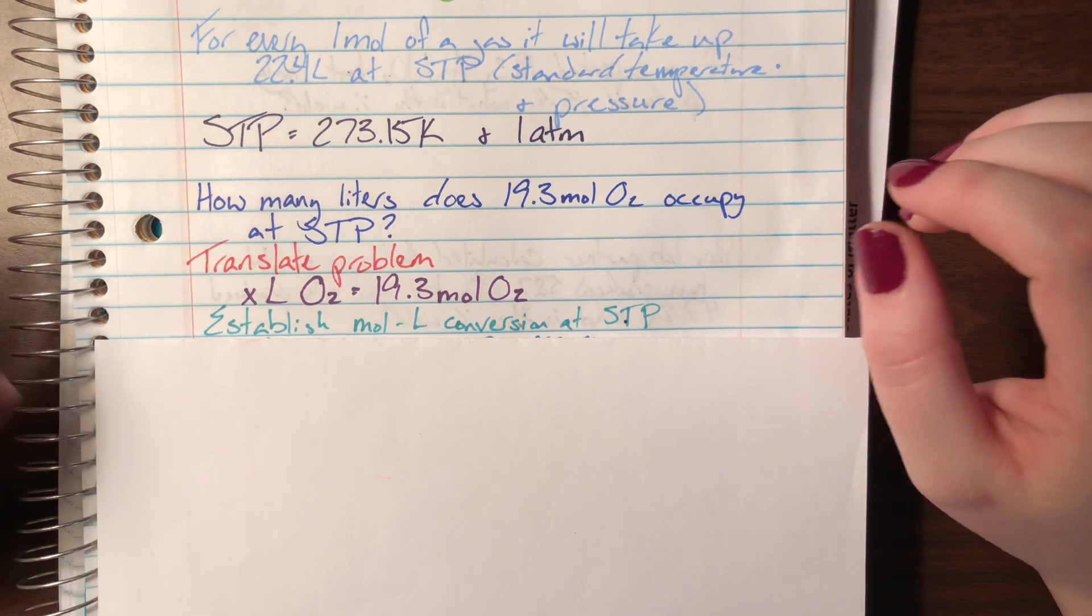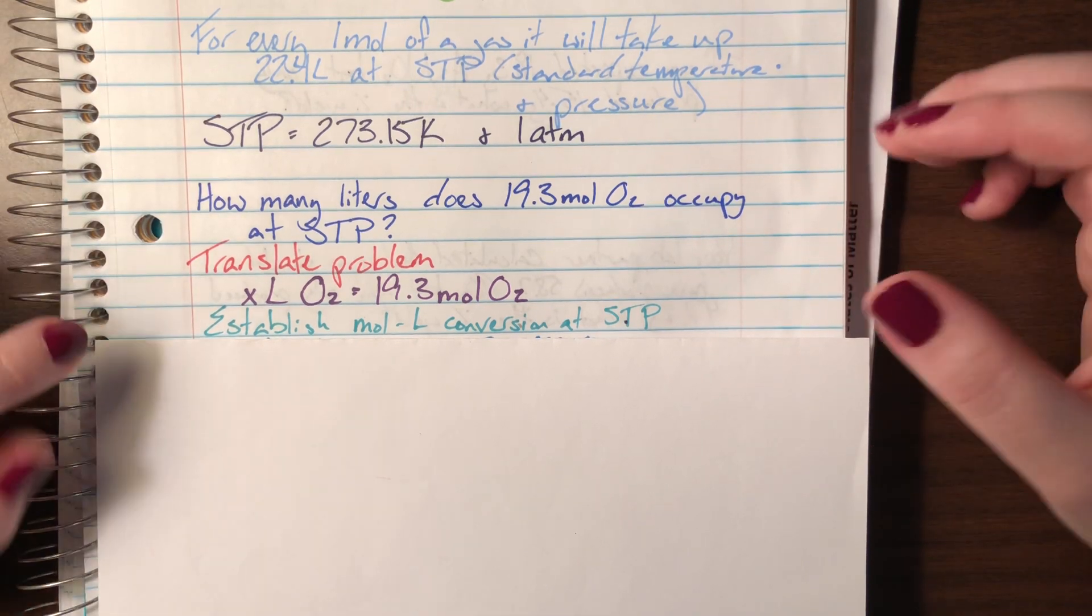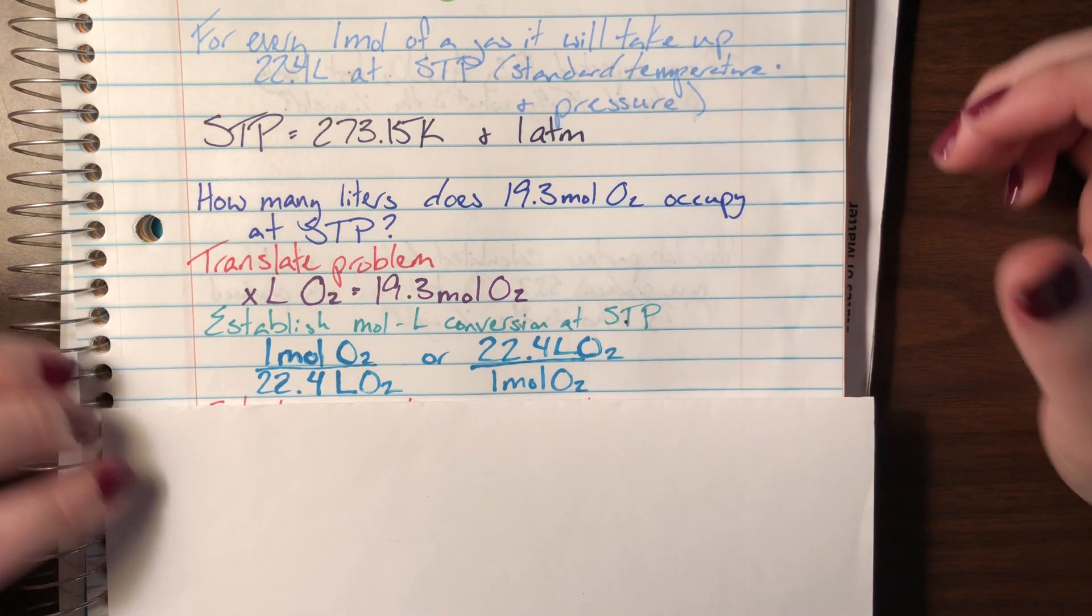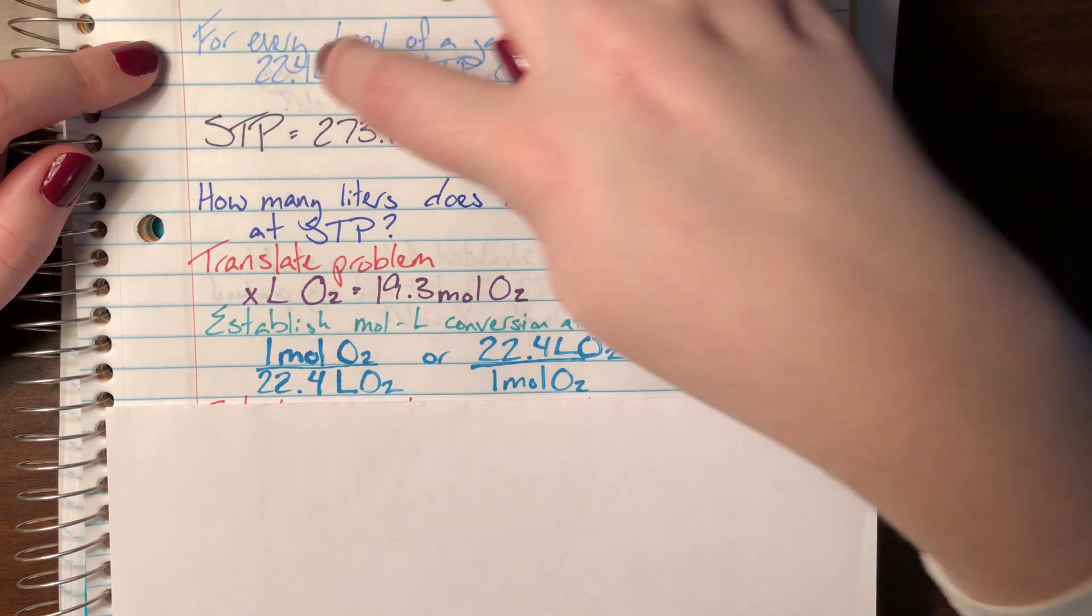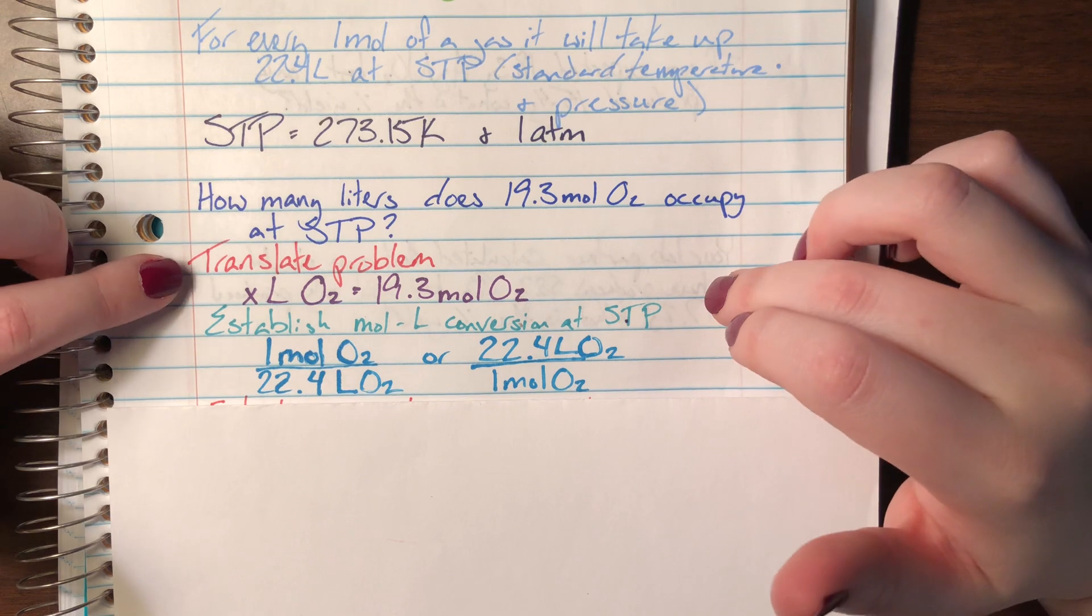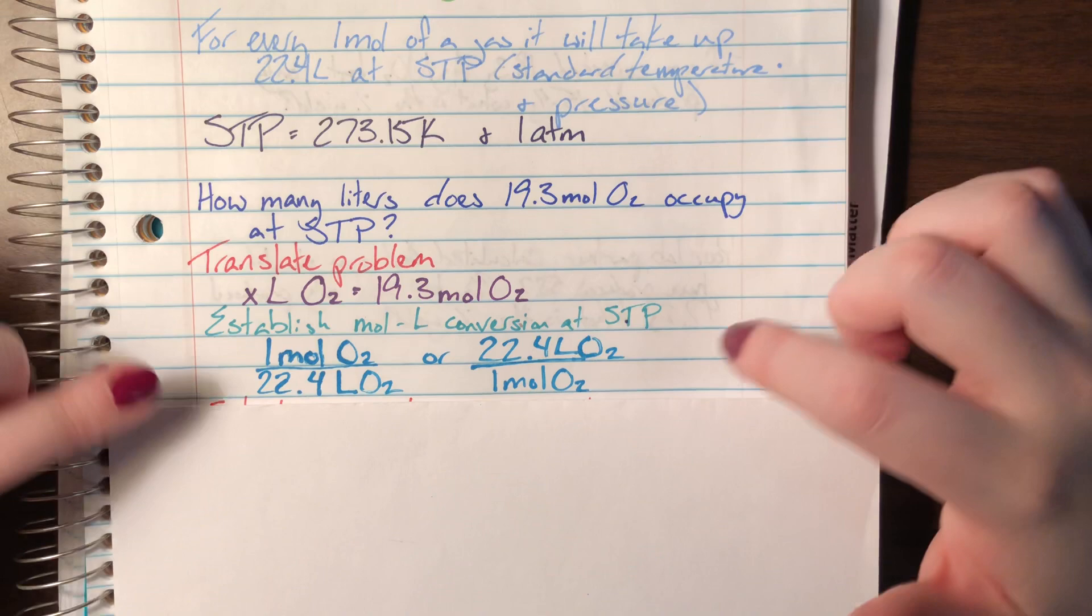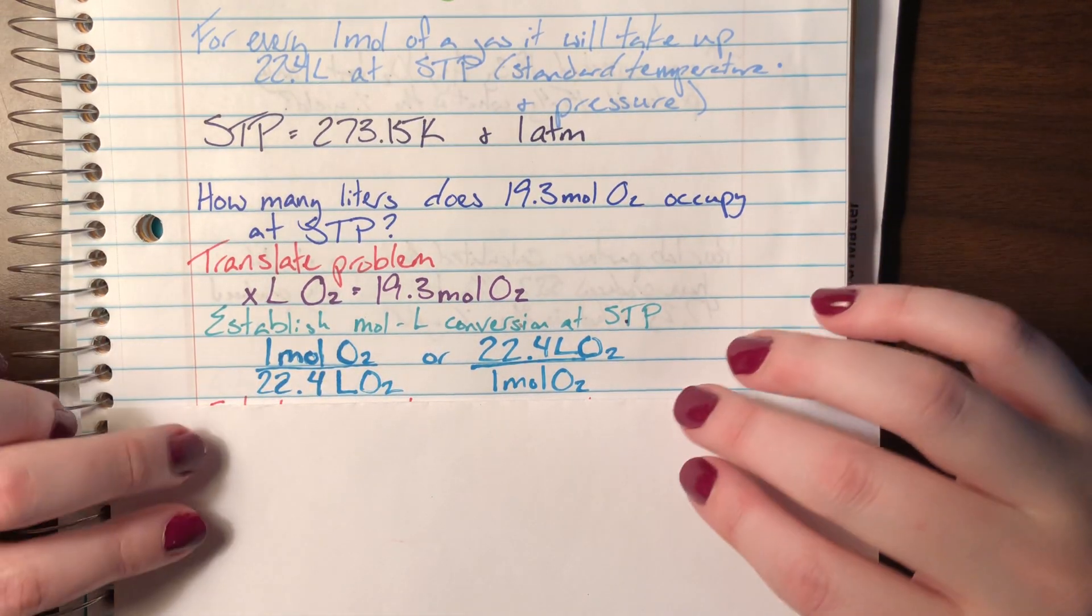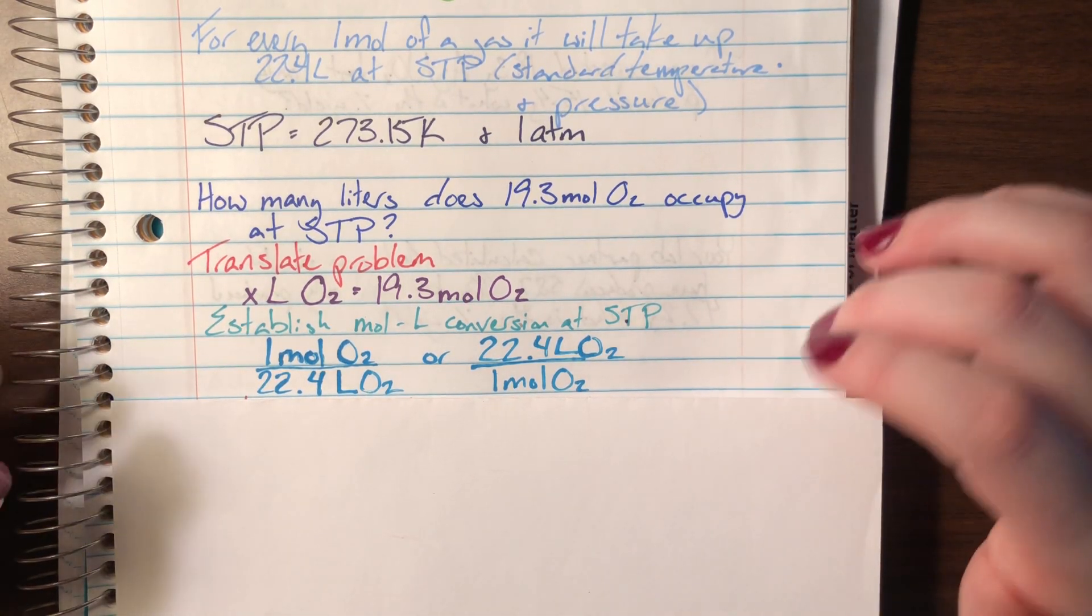So we need to establish this conversion right now. It's in a sentence form. We're going to go ahead and we're going to put it into a conversion factor form. And since it says for every one mole of gas there are 22.4 liters. And since specifically this problem is talking about O2 I went ahead and I attached the compound O2 to this fraction, though this conversion is true for any sort of gas at all. But since we're dealing with oxygen, I went ahead and I attached oxygen to those numbers.